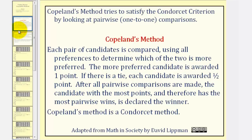Copeland's Method tries to satisfy the Condorcet Criterion by looking at pairwise or one-to-one comparisons. Each pair of candidates is compared using all preferences to determine which of the two is more preferred. The more preferred candidate is awarded one point. If there is a tie, each candidate is awarded half a point. After all the pairwise comparisons are made, the candidate with the most points, and therefore the one that has the most pairwise wins, is declared the winner.